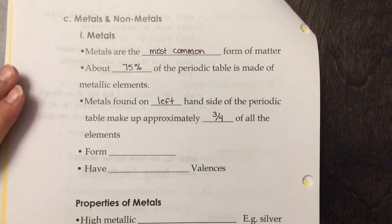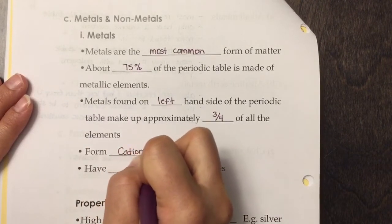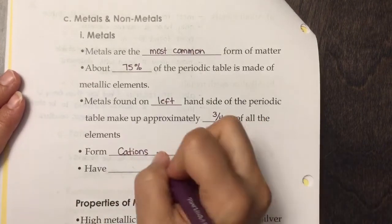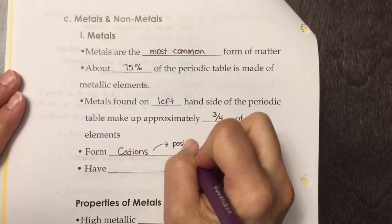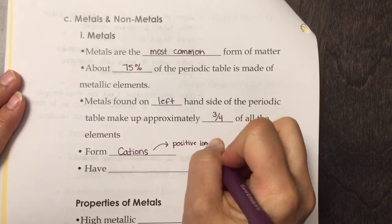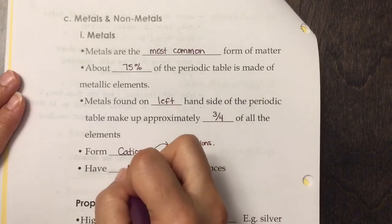Which makes sense - if it's 75%, then three-quarters is right. They form cations, which means positive ions that we'll talk about shortly, and they have positive valences.